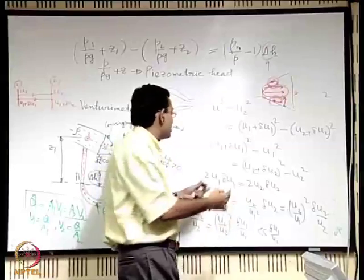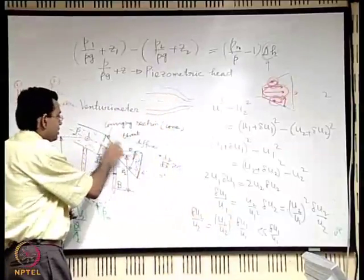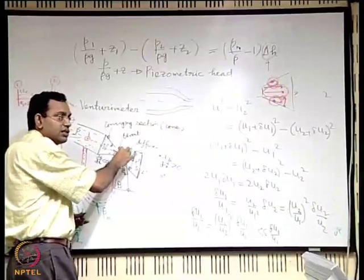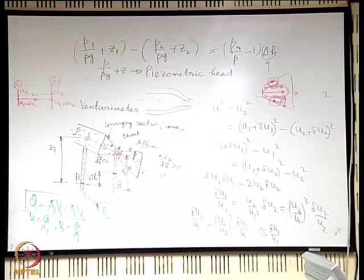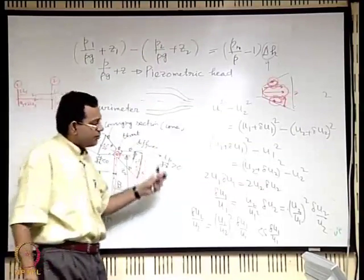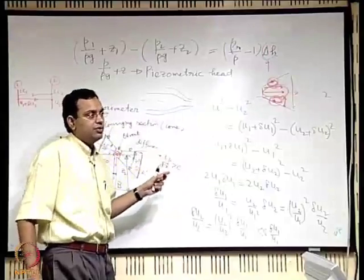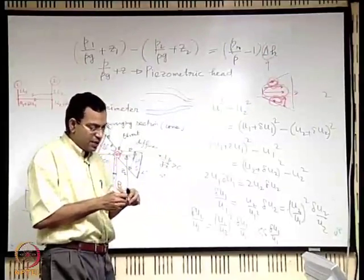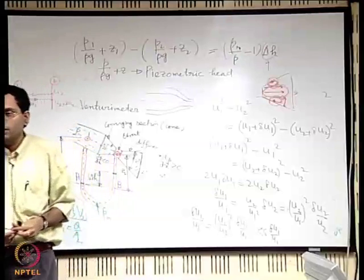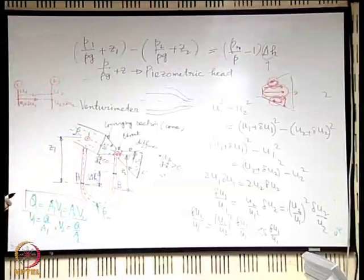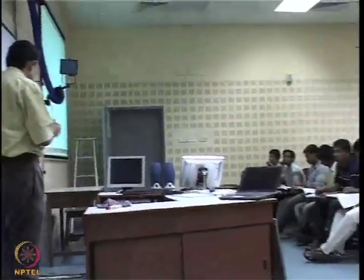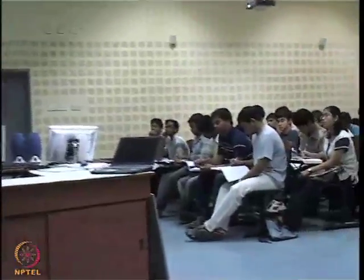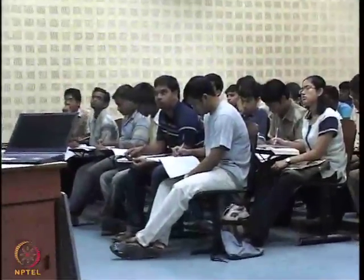If one designs this device well by minimizing losses, the coefficient of discharge — ratio of actual to ideal flow rate — is very close to 1, around 0.97 to 0.98. Some non-idealities are taken care of by the continuously converging section and the properly designed diffusing section. The Venturimeter is a common device used in pipelines to measure flow rate, but it is not very inexpensive. For very routine applications, one might look for cheaper devices following similar principles.